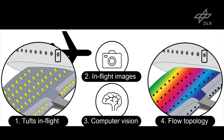In this work, we present a computer vision system that learns to visualize the local flow topology from in-flight images with tufts. The central idea is to install tufts and fly an aerial system. Images are then taken during real flights, and from these images we apply semantic segmentation to automatically extract the shape and semantics of tufts for aerodynamic characterization.